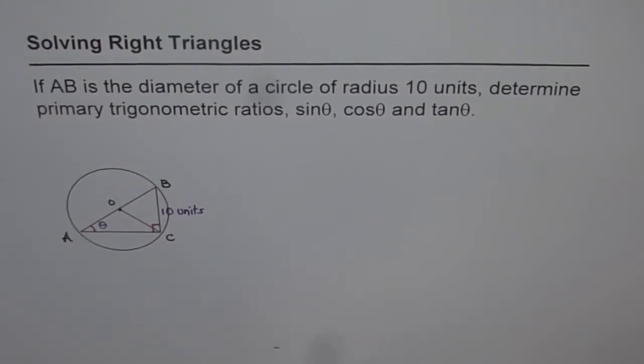Solving right triangles. If AB is the diameter of a circle of radius 10 units, determine primary trigonometric ratios sin θ, cosine θ and tangent θ.